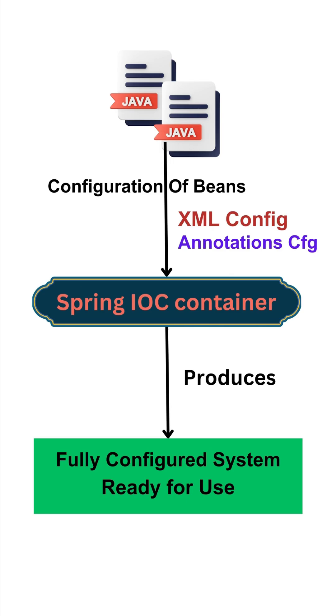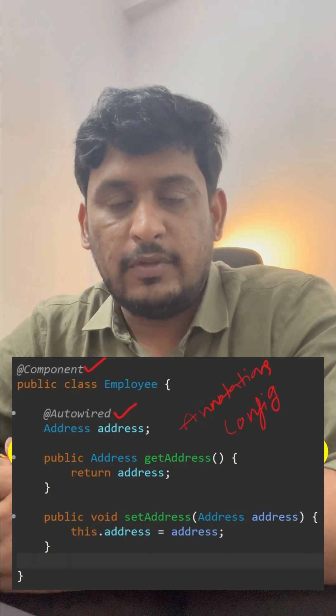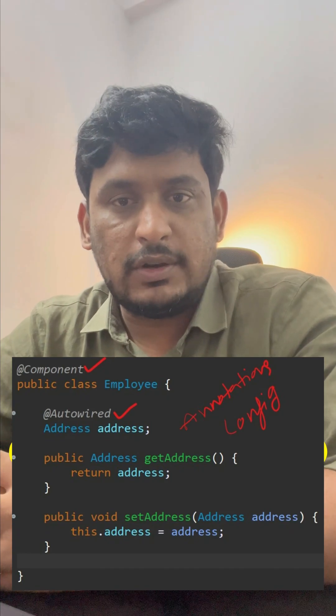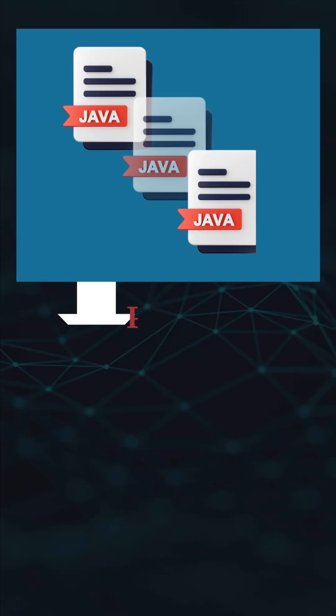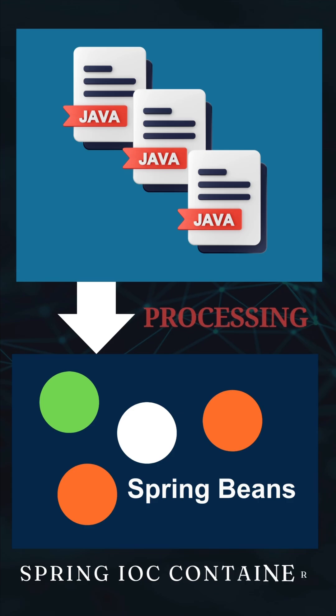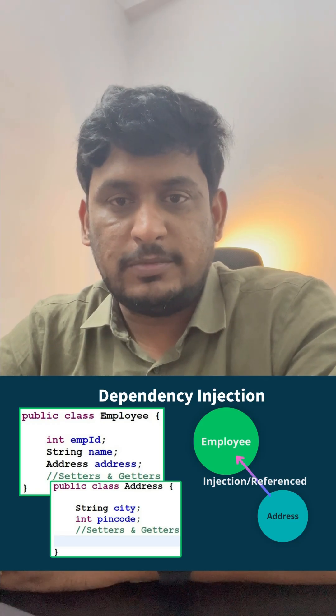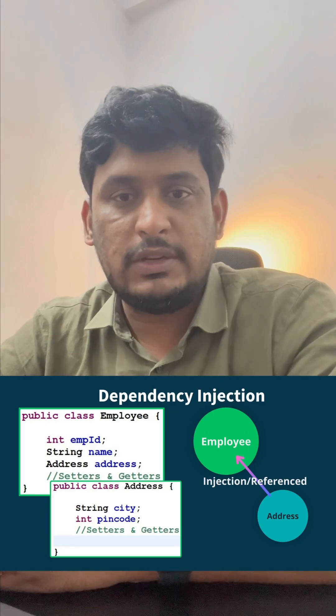But now as part of Spring Framework, once we define our Java classes, we configure which class objects have to be created, as well as dependency injection between one object and another object. Based on that configuration, the logic of creating objects, configuring objects, and injecting one object into another is shifted from our code to the Spring Framework level. That's why this process is called Inversion of Control.